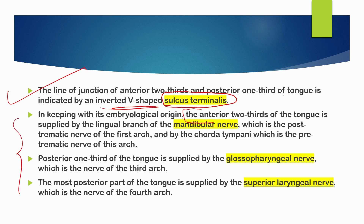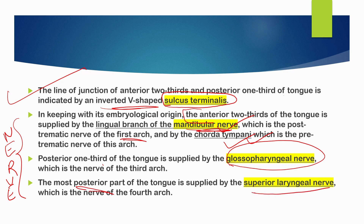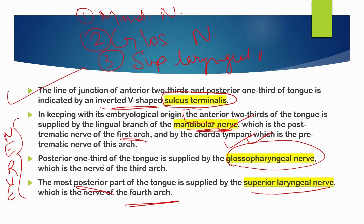Now for the nerve supply. The anterior two-thirds of the tongue is supplied by the lingual branch of the mandibular nerve, which is the post-trematic nerve of the first arch, and by the chorda tympani of the mandibular nerve. The posterior one-third is supplied by the glossopharyngeal nerve, and the posteriormost part is supplied by the superior laryngeal nerve, which is the nerve of the fourth arch. So the three nerves are: the mandibular nerve, the glossopharyngeal nerve, and the superior laryngeal nerve.